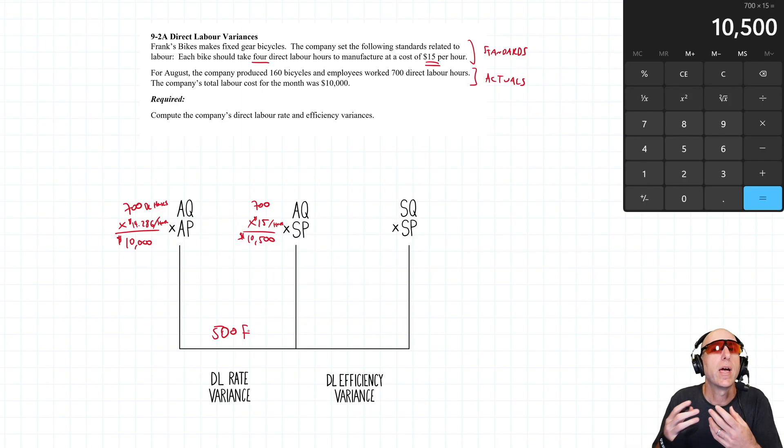Why would that have happened? Maybe we had a more inexperienced workforce, some turnover. Our wage paid was lower than expected. By the way, this can be a bad thing even though it says favorable in the variance. Maybe we're underpaying people and we're going to lose people. There are all sorts of negative consequences to favorable variances.